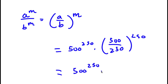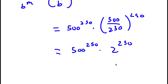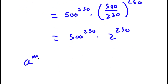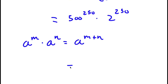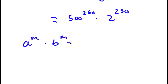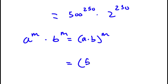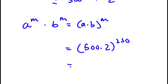So I find 500 to the power of 250 times 2 to the power of 250. Now, if I have something in the form a to the power of m times b to the power of m, this is simply equal to a times b to the power of m. So 500 to the power of 250 times 2 to the power of 250 equals 500 times 2 to the power of 250. And 500 times 2 is 1,000, so I have 1,000 to the power of 250.